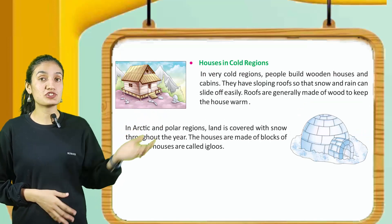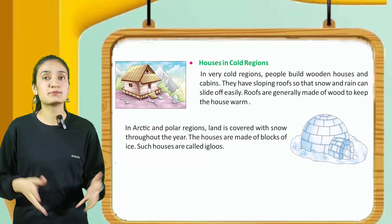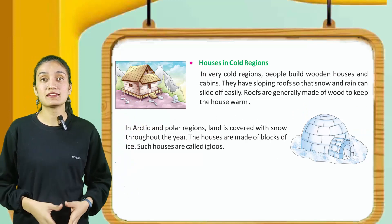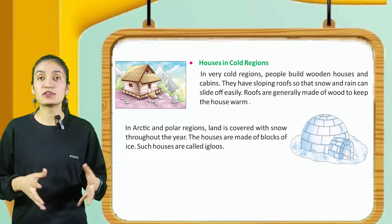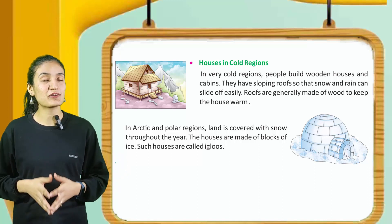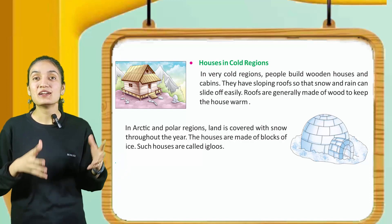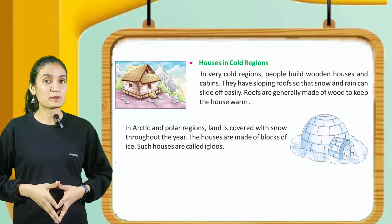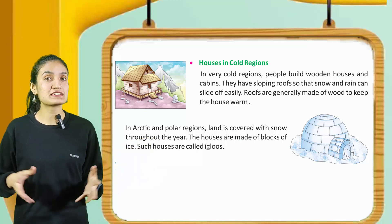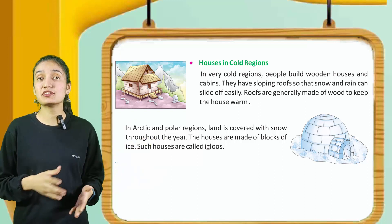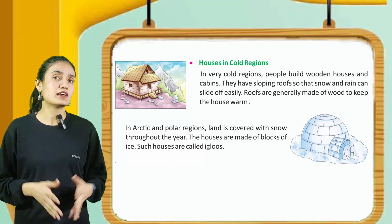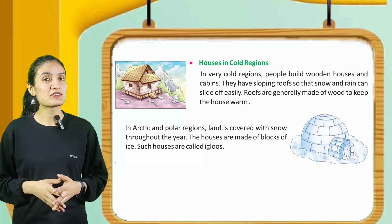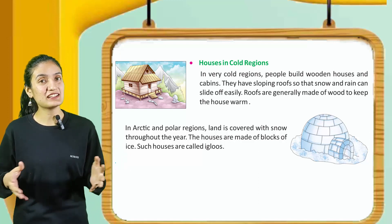Houses in cold regions: in very cold regions, people build wooden houses and cabins. They have sloping roofs so that snow and rain can slide off easily. Roofs are generally made of wood to keep the house warm. In arctic and polar regions, land is covered with snow throughout the year. The houses are made of blocks of ice. Such houses are called igloos.